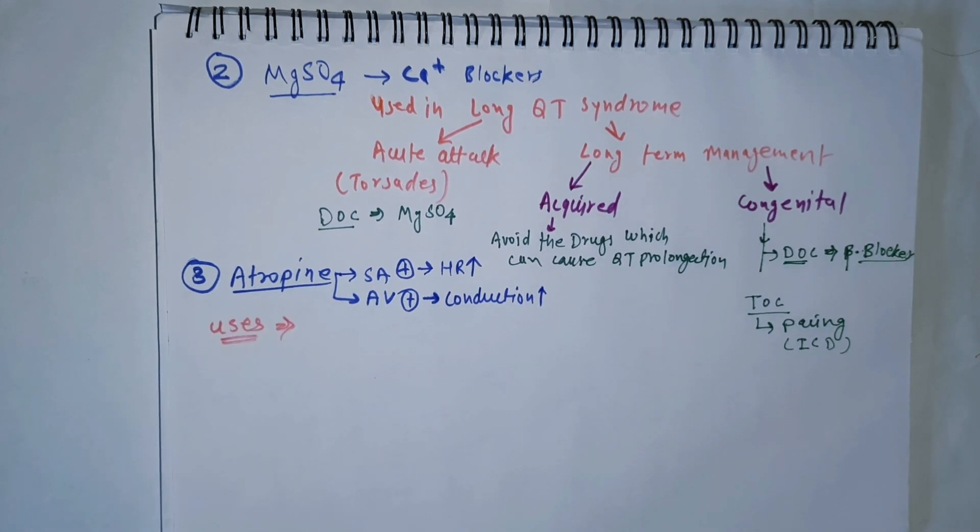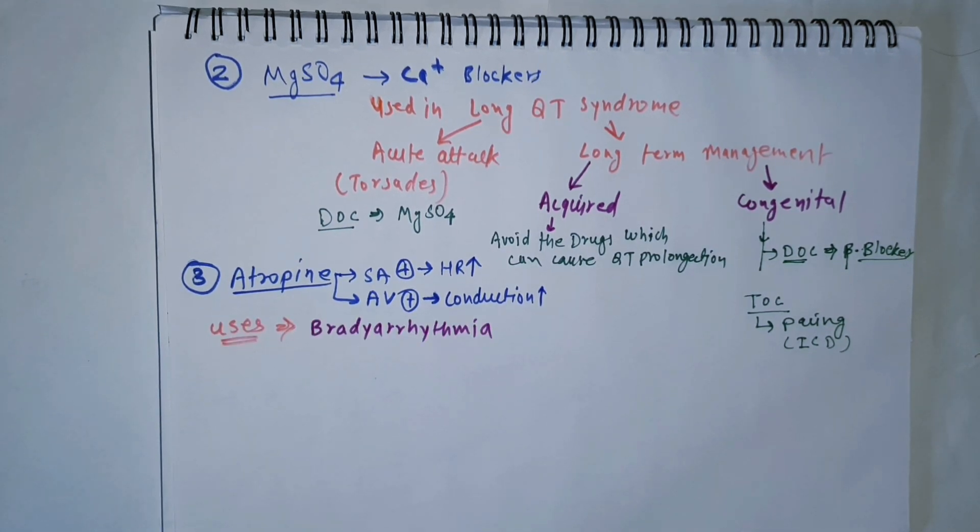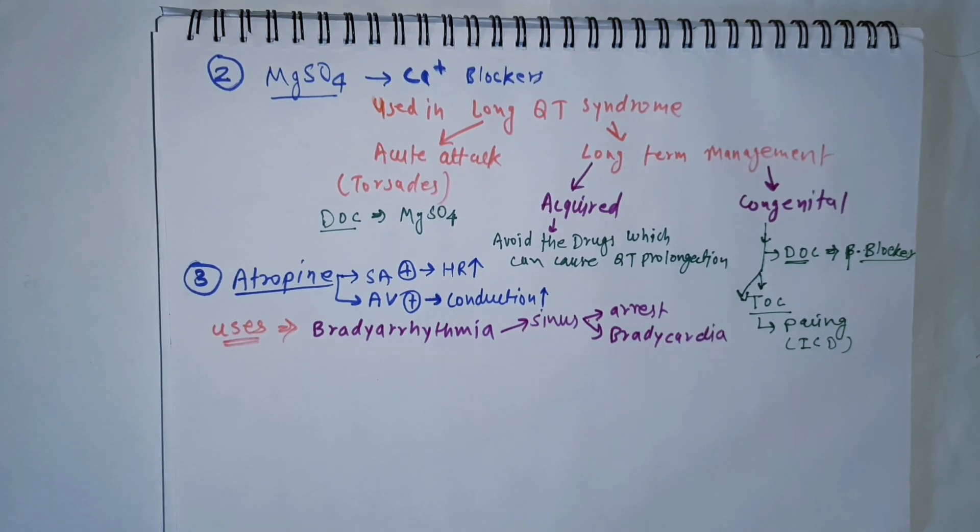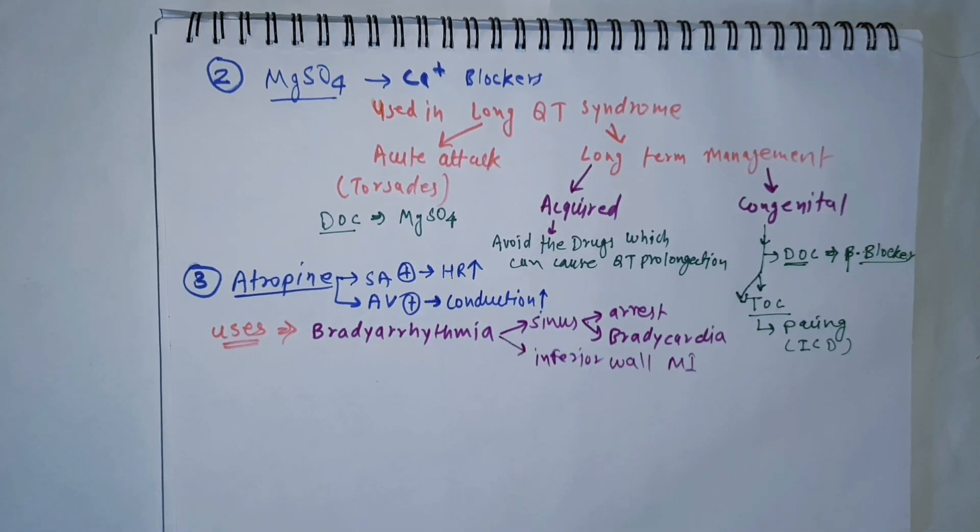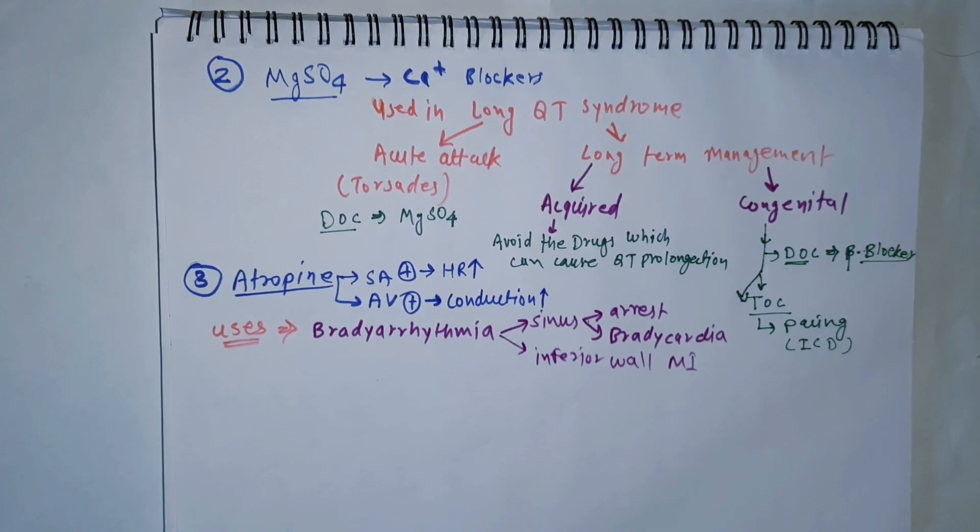That is why atropine is used in bradyarrhythmias like sinus arrest and sinus bradycardia, and also in cases of inferior wall myocardial infarction.